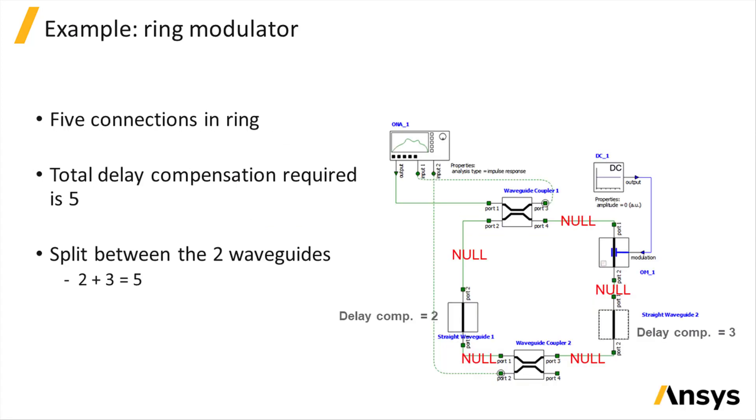For example, the ring modulator presented in the Frequency Domain Simulation section has five connections along the ring, and a total delay compensation of 5 is required.